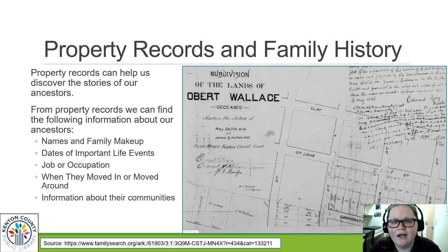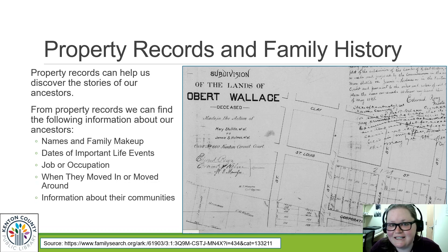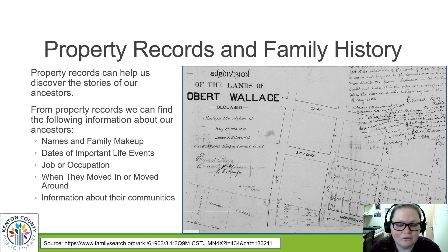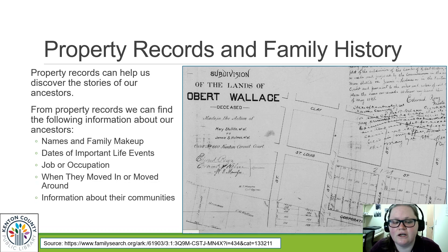There might be clues about whether they were doing agriculture, what kind of crops, whether they were raising cattle or grazing. Property records can also tell us when families moved — when a family moved in, moved around, or moved out. That's great genealogical information to look for. They can also tell us about the communities our ancestors lived in and help us find clues for other genealogical records.